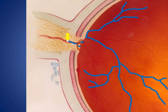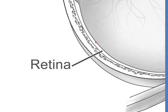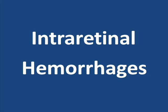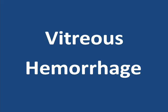As pressure in the retinal veins increases, the retinal capillaries begin to leak blood into the retina. Bleeding contained within the retina, as shown here in this cross-section of the retina, is called an intra-retinal hemorrhage. On occasion, especially early in the course of central retinal vein occlusion, the blood from an intra-retinal hemorrhage may make its way out into the vitreous. This kind of bleeding is called a vitreous hemorrhage.